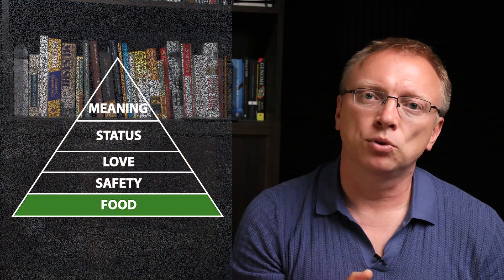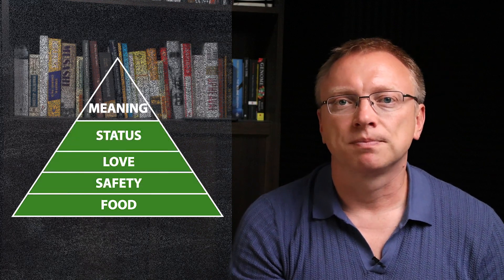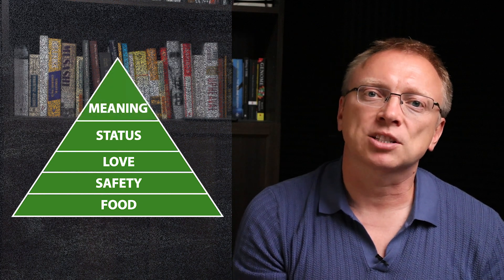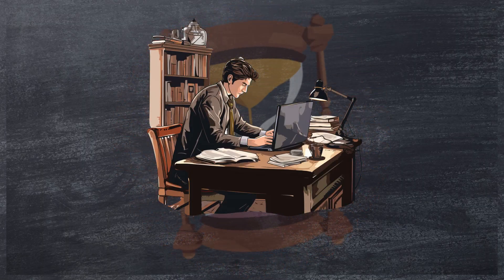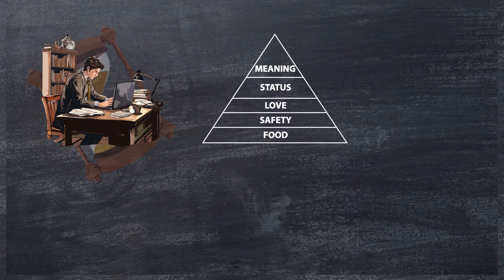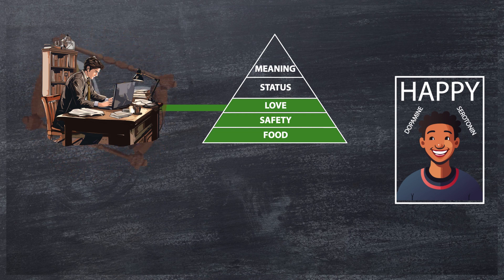What do we want in life? We want food, safety, love, group acceptance or status, and sometimes meaning. This is a classic Maslow pyramid. And how do we climb this pyramid? We work. And as we work, we climb higher. As we gradually achieve our goals, our brain releases dopamine and serotonin hormones, making us happy.